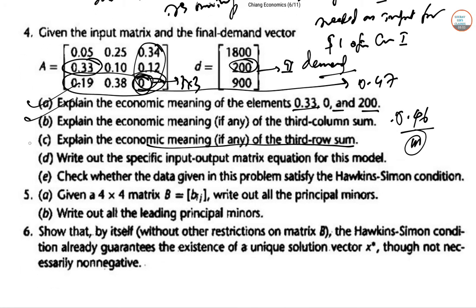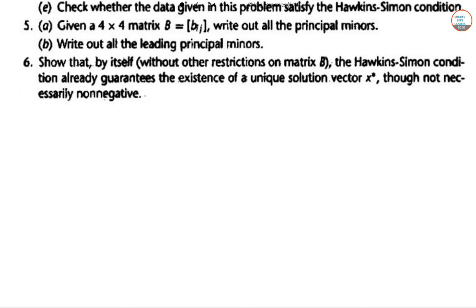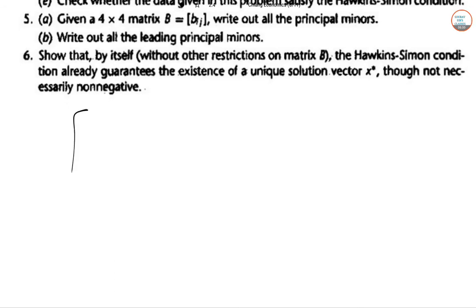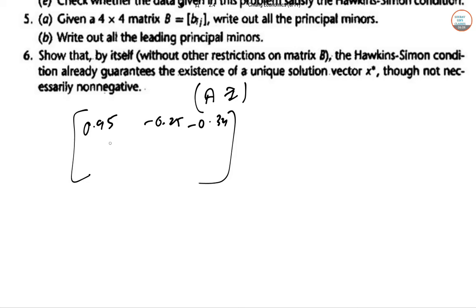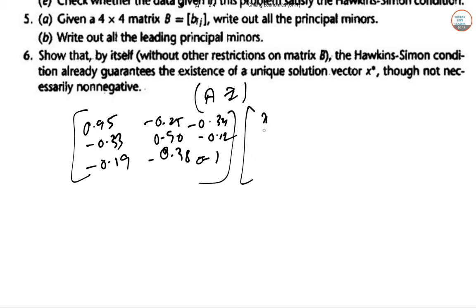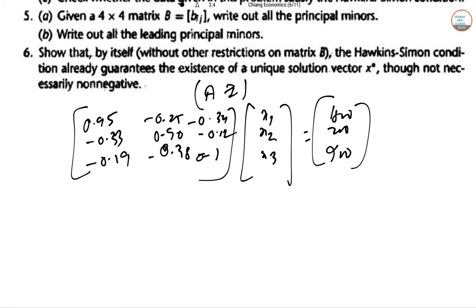Next, write the specific input-output matrix equation for this model in (I minus A) format. The system is: 0.95, -0.34, -0.33, -0.19, then -0.90, 1, -0.38, and the remaining entries, times X1, X2, X3 equals the demand vector 1800, 200, and 900.